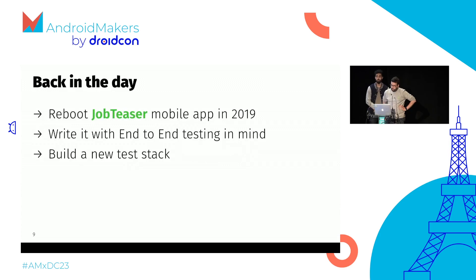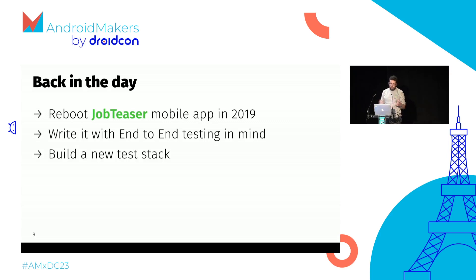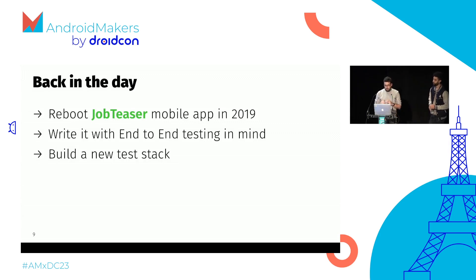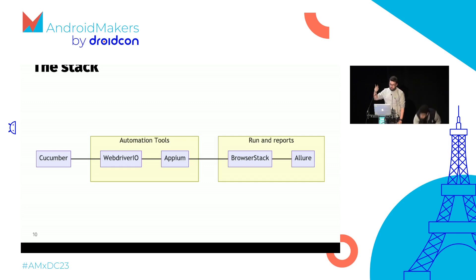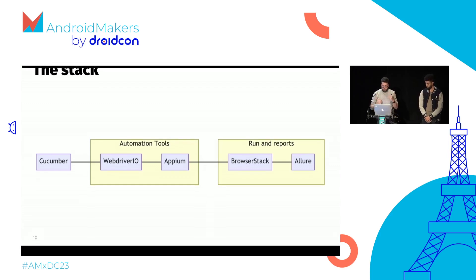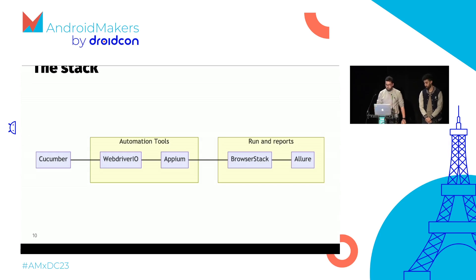Four years ago, we rebooted our mobile app at JobTeaser. The company was also shifting left and introduced end-to-end testing to the global stack on both web and mobile. For us, it was the best moment to say, okay, we will build it up with end-to-end testing in mind. So with QA engineers, we built a testing stack to help us catch the most bugs before going to production. The stack includes Cucumber to describe the tests, WebDriver.io and Appium to automate and write the test code, running them on BrowserStack, and mixing reporting with Allure. We have five different technologies to run our end-to-end tests.